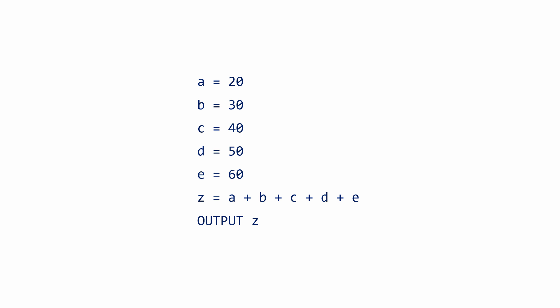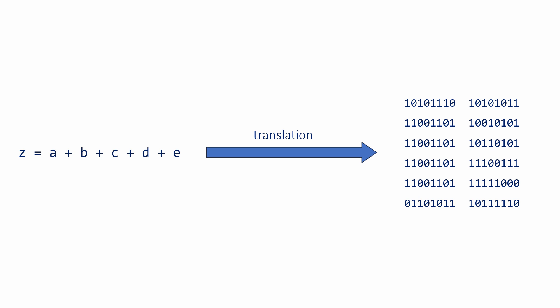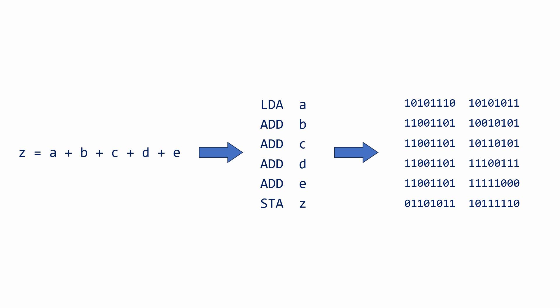We're going to think about what's going on inside the CPU while this program is running. In fact, we're only going to consider what happens when one instruction of this high-level program is being executed, so we can focus on the job of the accumulator. Before any high-level code can run, it has to be translated into something that the CPU can understand — it first has to be turned into machine code.